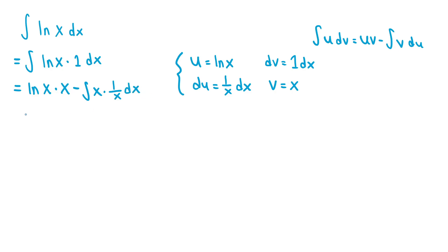We can simplify this and rewrite this as x ln(x) minus the integral of 1 dx, since x times 1 over x is just equal to 1. So now we can easily compute this integral.